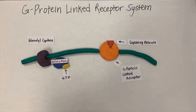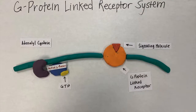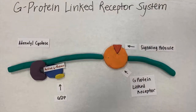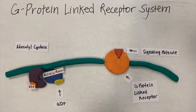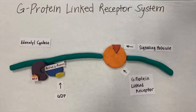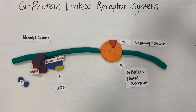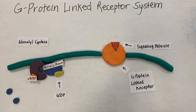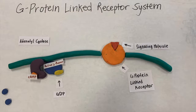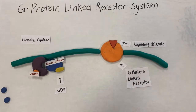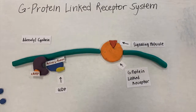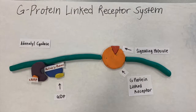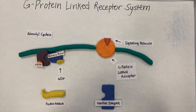Then the active G protein attaches to the adenylyl cyclase. The adenylyl cyclase also attaches to ATP and cAMP. The kinase is then activated by cAMP and begins the biochemical pathway.